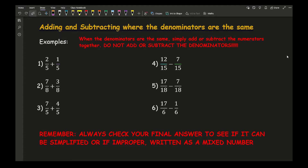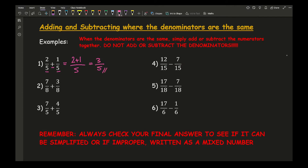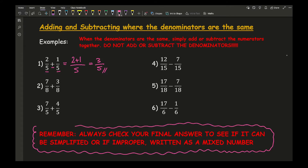Looking at question 1, I can see both denominators are the same, so the only thing I've got to do is add the two numerators together: 2 plus 1 over 5, which equals 3 over 5. The key thing to note is that you always want to check your final answers to see if they can be simplified, or if they've become an improper fraction — can you write it as a mixed number?